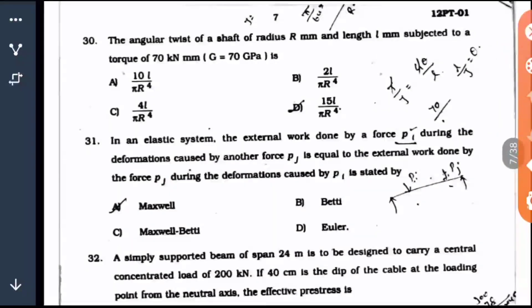Question 30: The angular twist of a shaft of radius R mm and length L mm subjected to a torque of 70 kN mm and G given as 70 GPa. Now we're going to substitute these values in the formula. Before doing that let's see the units. Torque is given as 70 kN mm and G in GPa. GPa is nothing but 10 to the power 3 times MPa, N per mm square. This 10 to the power 3 can be converted as kN also.